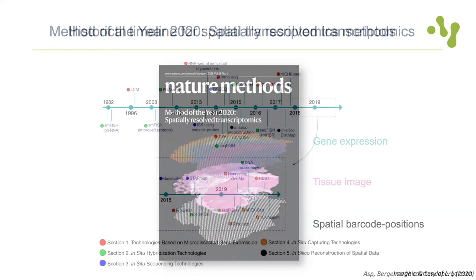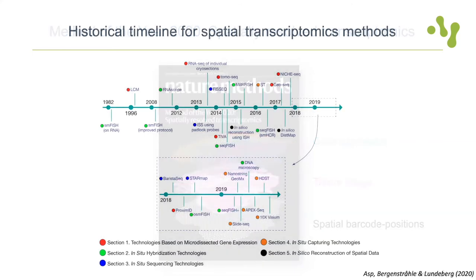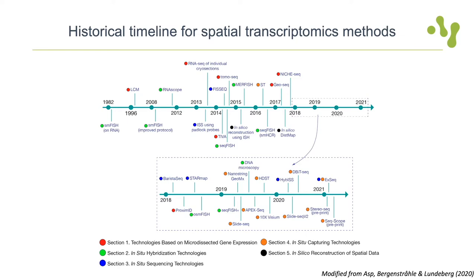Looking back at the historical timeline of spatial transcriptomics technologies, we can see an acceleration of published methods within the last two to three years. Although a recent review came out just a year ago, a number of new methods have already entered the scene, showing how quickly this field is expanding. At NGI, we offer spatial RNA sequencing through the 10x Visium method as a service — a product that emerged from a technology called spatial transcriptomics developed here at SciLifeLab.